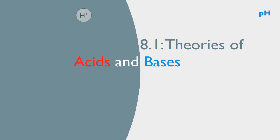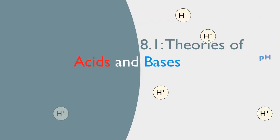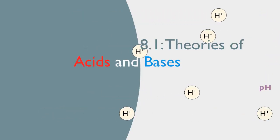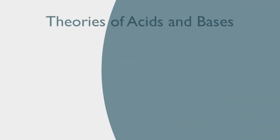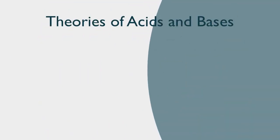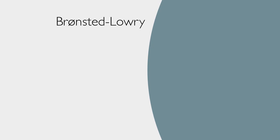Welcome to Subtopic 8.1, Theories of Acids and Bases. In IV Chemistry, there are two theories of acids and bases that we need to learn. The first is Bronsted-Lowry, and the second is Lewis Theory. Let's look at how they define acid and base.